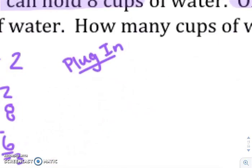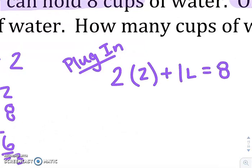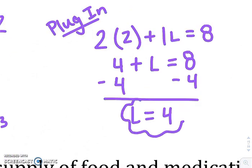Two S plus one L equals eight. Two S, which we now know is two, plus one L equals eight. So four plus L equals eight minus four minus four.